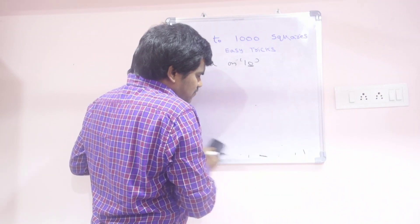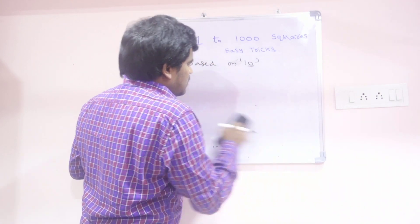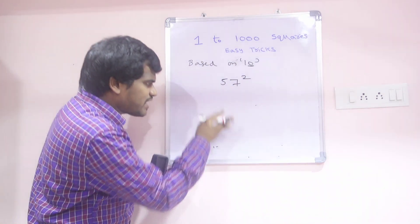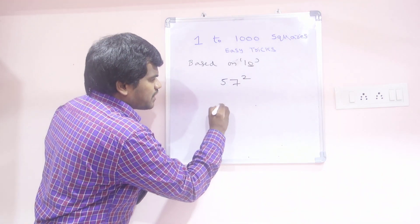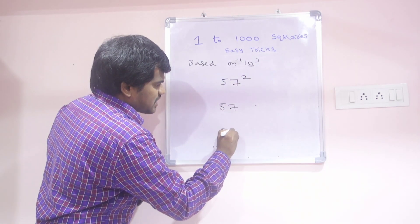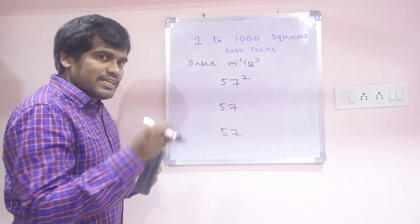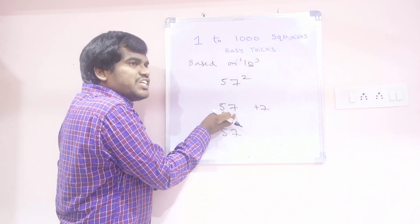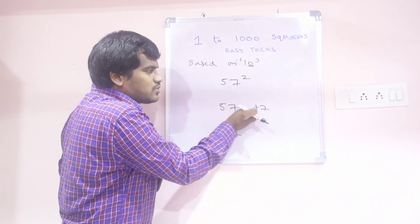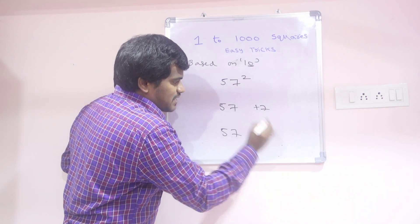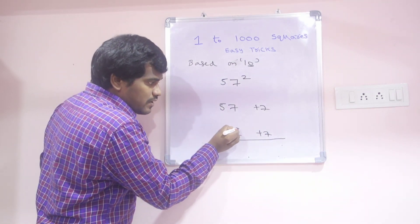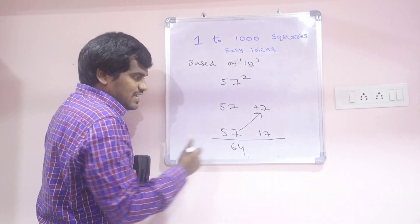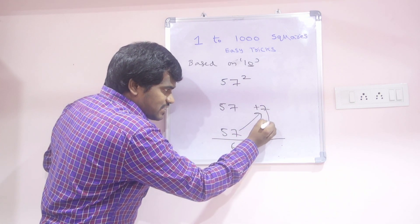Next example: 57 square. First write 57 two times. We add plus 7 — why? Because 57 is near to 50, and it is 7 more, so plus 7 and also plus 7 here. Now add these two: 57 plus 7 is 64. Slash — 7 times 7 is 49.